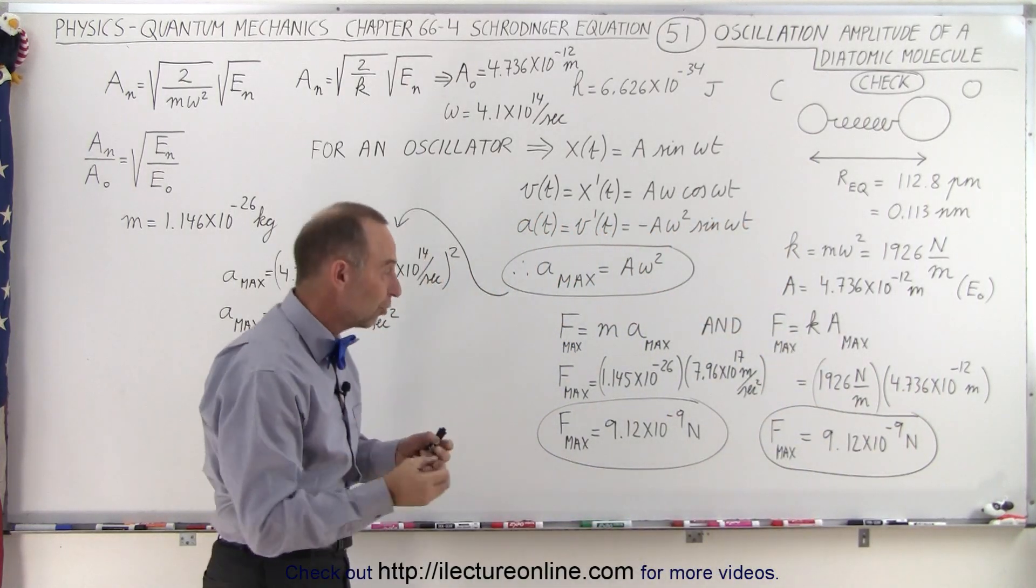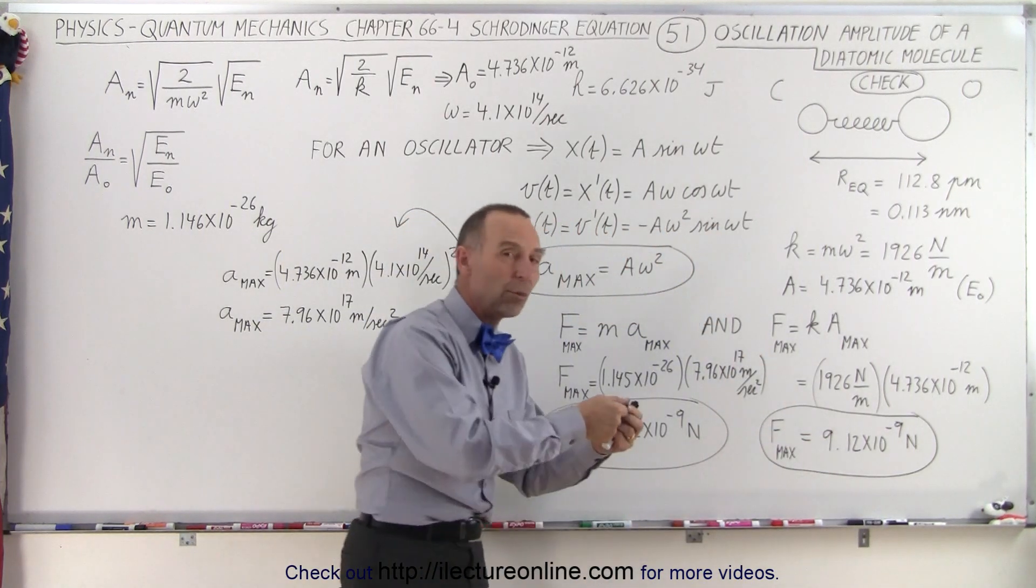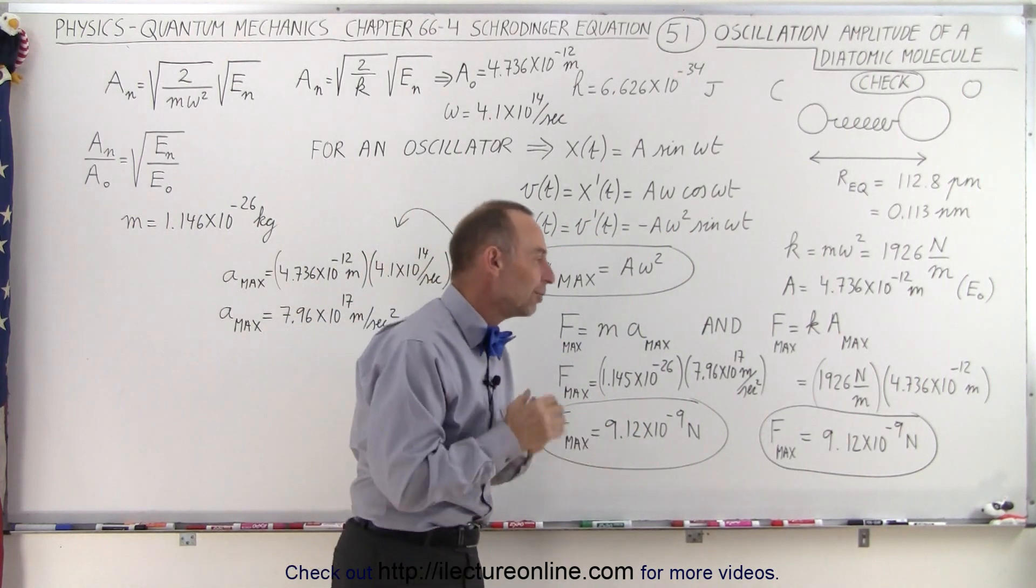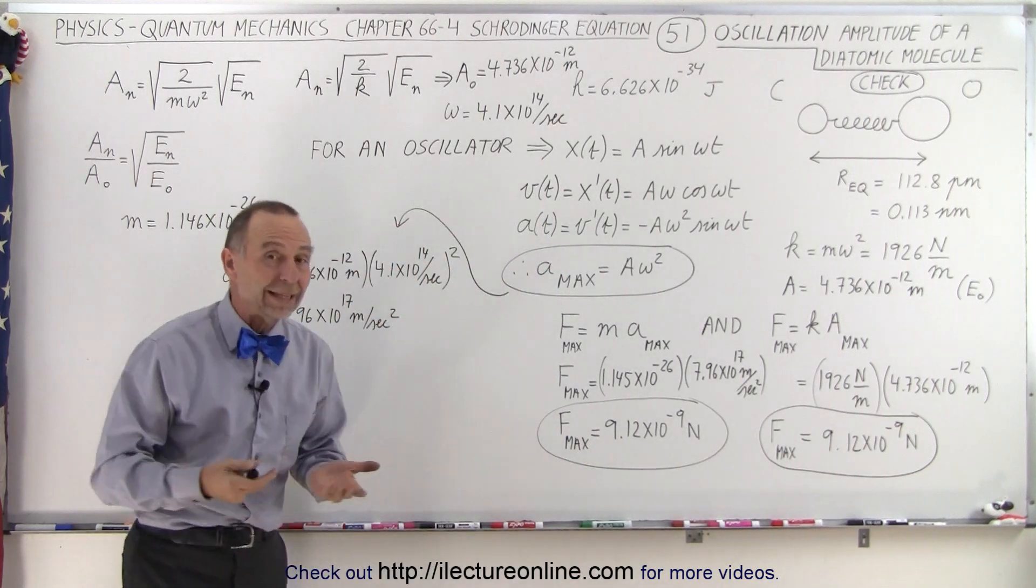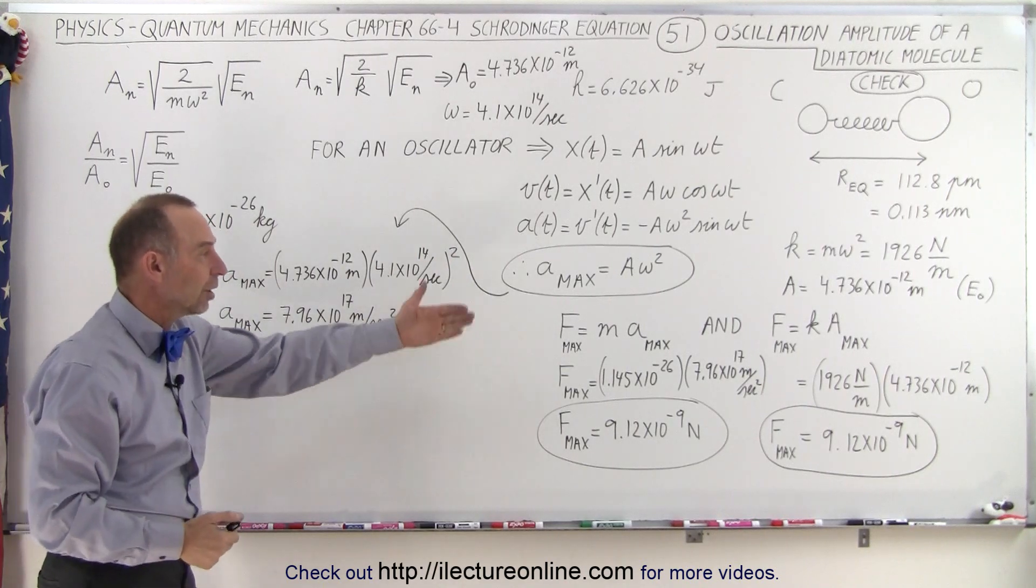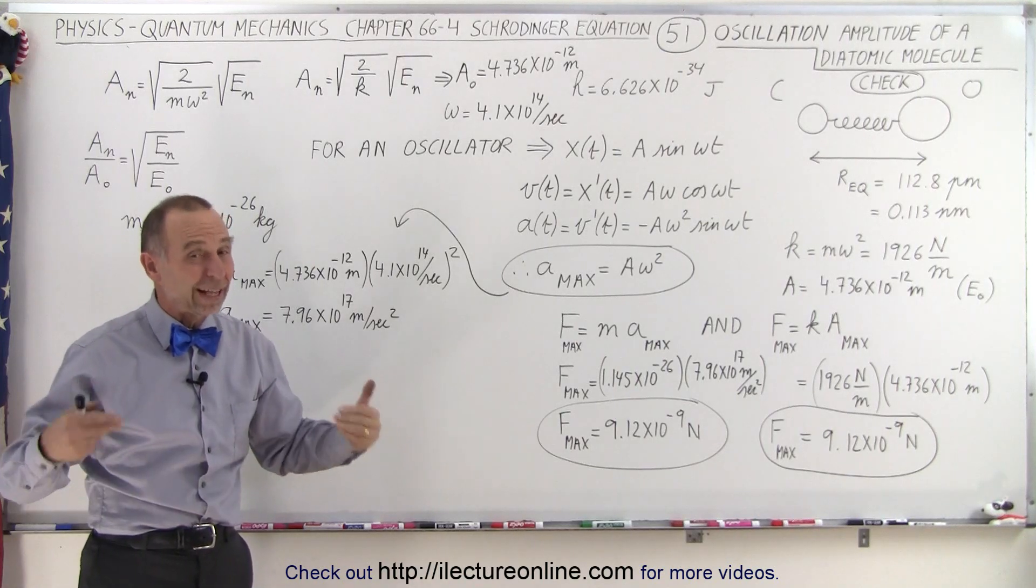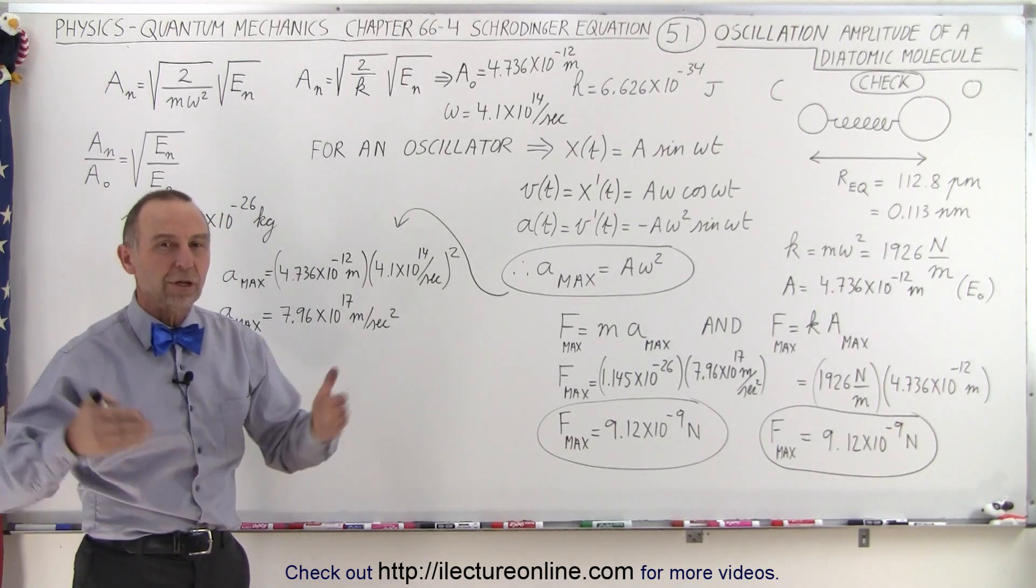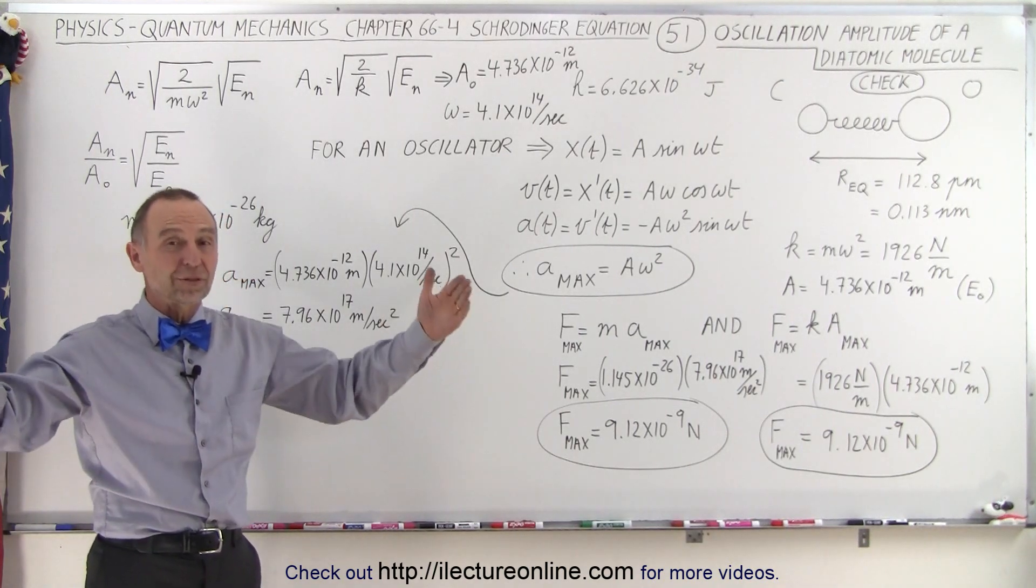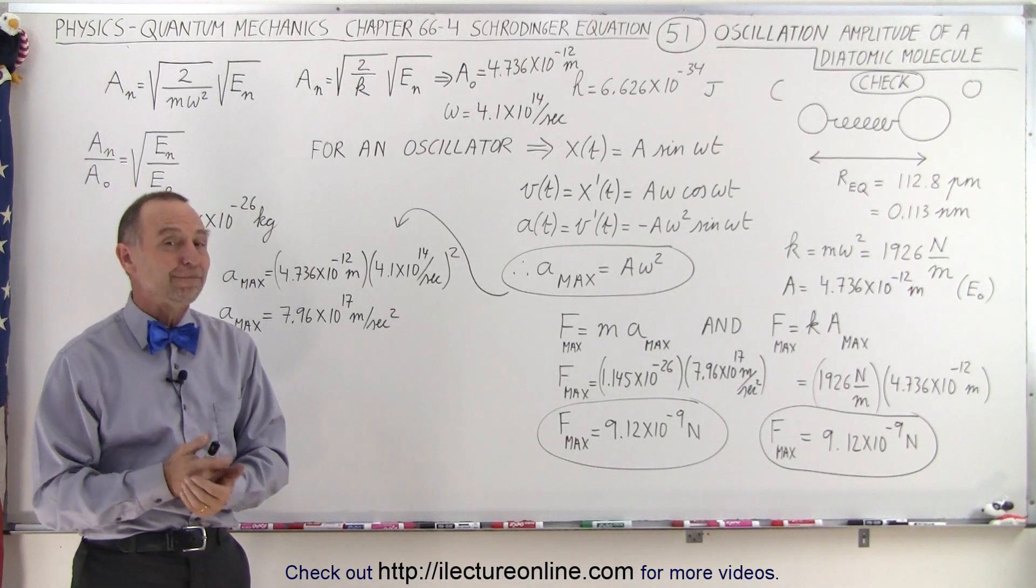So the maximum force experienced because of the maximum acceleration gives us the same result as the maximum force experienced when we pull the spring back to the maximum amplitude of the oscillation, which shows that even the quantum mechanical oscillator follows all the same rules and regulations of Newton's second law and the spring constant of a classical mechanical oscillator as well. So you can see that everything seems to work out, and we have the right values for the oscillation amplitudes, the various energy levels, and as a percentage of the total distance between the atoms, we now have a good feel of what a quantum mechanical oscillator looks like. That's how we do it.